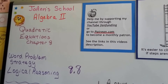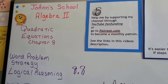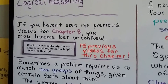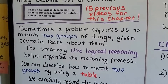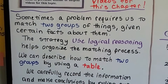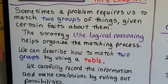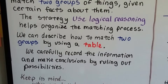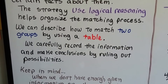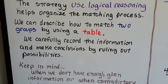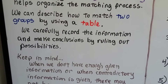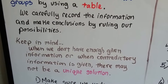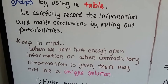We're in Algebra 2, section 8.8, and we're going to talk about a problem-solving strategy called Logical Reasoning. This is the last video for Chapter 8. Sometimes a problem requires us to match two groups of things given certain facts about them. The strategy of Logical Reasoning helps organize the matching process. We can describe how to match two groups by using a table, carefully recording information and making conclusions by ruling out possibilities — we're going to use the process of elimination.